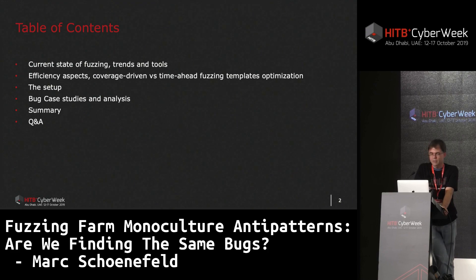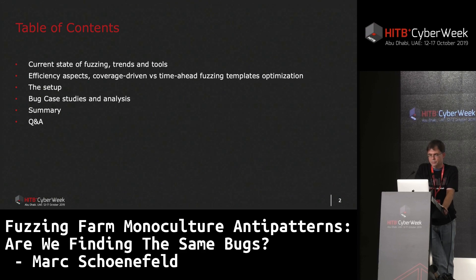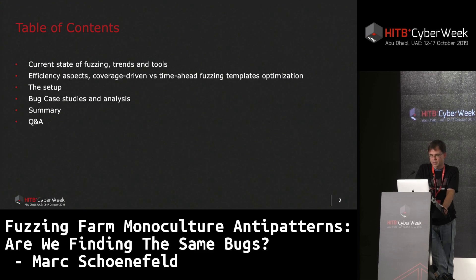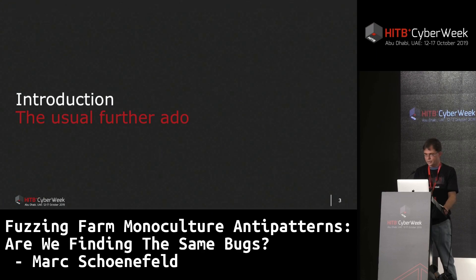Going to the agenda today: we first have a short look at the state of fuzzing, trends and tools, efficiency aspects, coverage-driven versus dumb fuzzing, and template optimization. Then I show a little project I set up going back to more simplified fuzzing setups and evaluate what we can achieve with those. Then we go into bug case studies, summary, and Q&A.